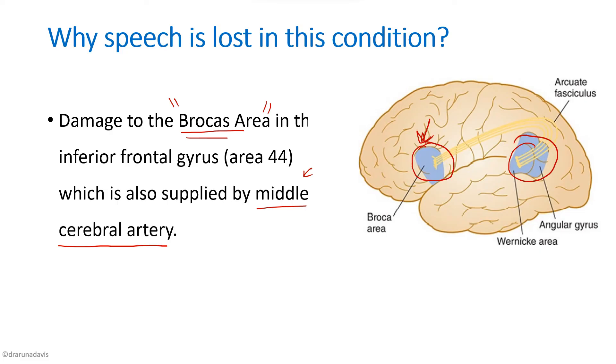So there are two reasons why speech is lost: one is involvement of the corticobulbar tract, and the other is damage to Broca's area due to shared blood supply from the middle cerebral artery.